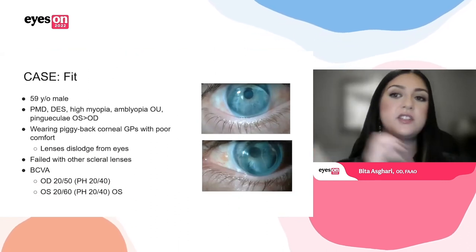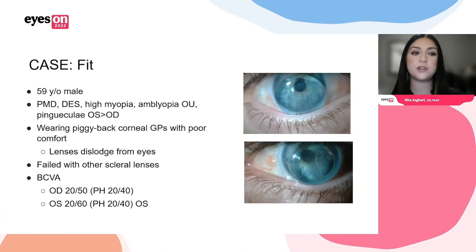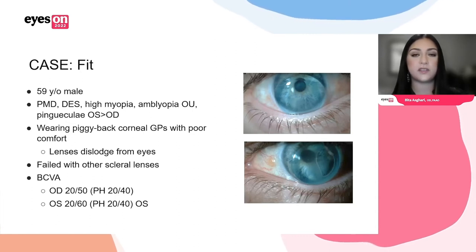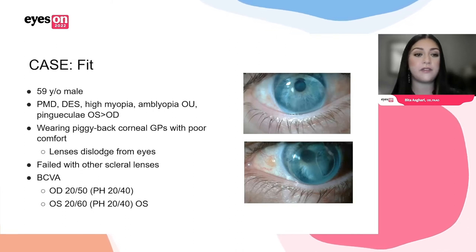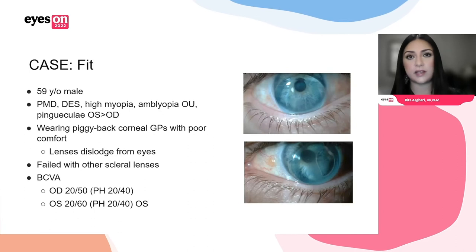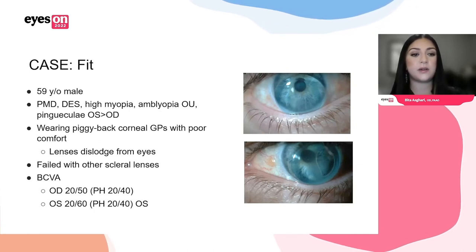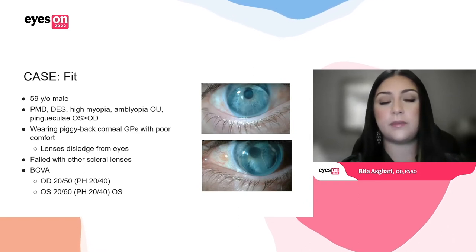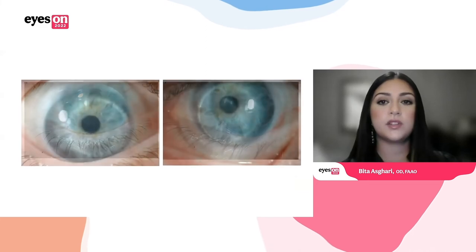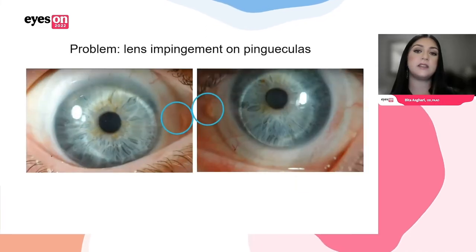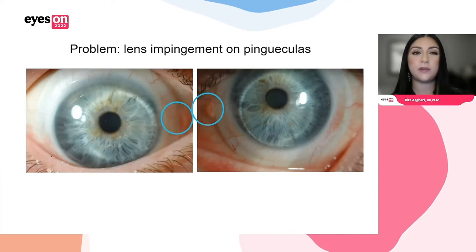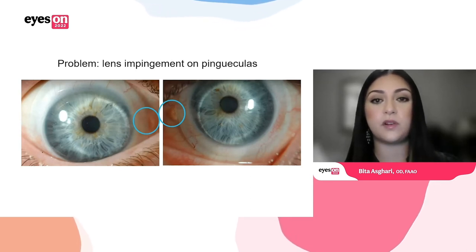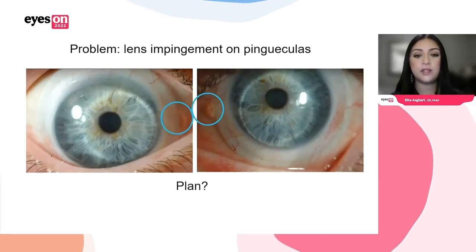Here's another case where fit was a challenge in being successful. This was a 49-year-old Caucasian male with a history of pellucid marginal degeneration who had been wearing corneal GPs for many years but was ready to move out of them because they were constantly dislodging from his eyes, and he couldn't function as well as he wanted to. He had tried scleral lenses before but couldn't tolerate them — they were uncomfortable and made his eyes red. His vision was 20/50 and 20/60 with some pinhole improvement potential to 20/40, overall limited by refractive amblyopia. You could see some prominent pingueculae, and looking at the last set of lenses he had been fit with, there was obvious impingement over the pingueculae — that was the variable.